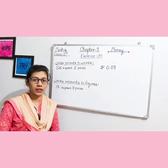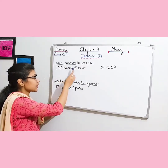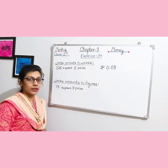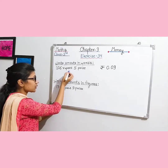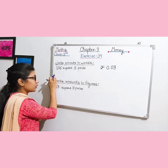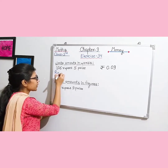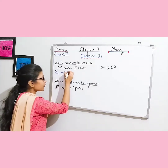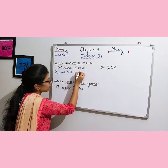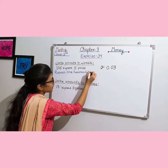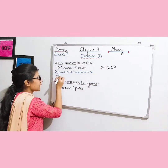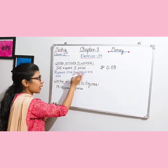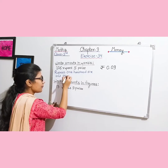In question number one — 'write amounts in words' — whenever you have to write a given amount in words, you write it in number name form. For example, the given amount is 106 rupees 5 paise. You write 'Rupees' first (in capitals, not 'Rupee'), then the number name for 106, then 'and', then 'paise' (small p) followed by 5.